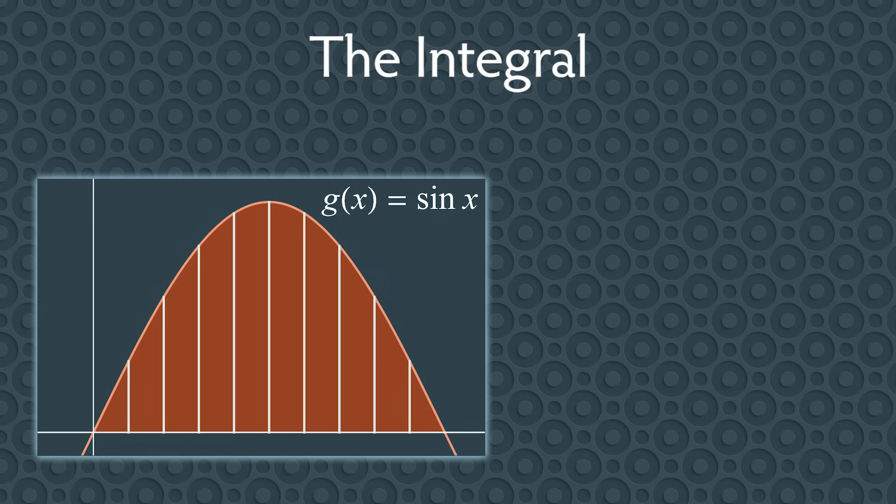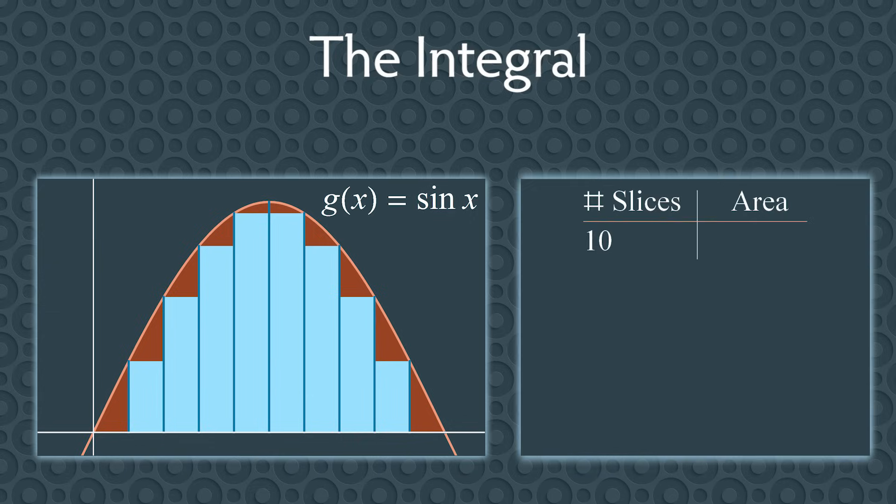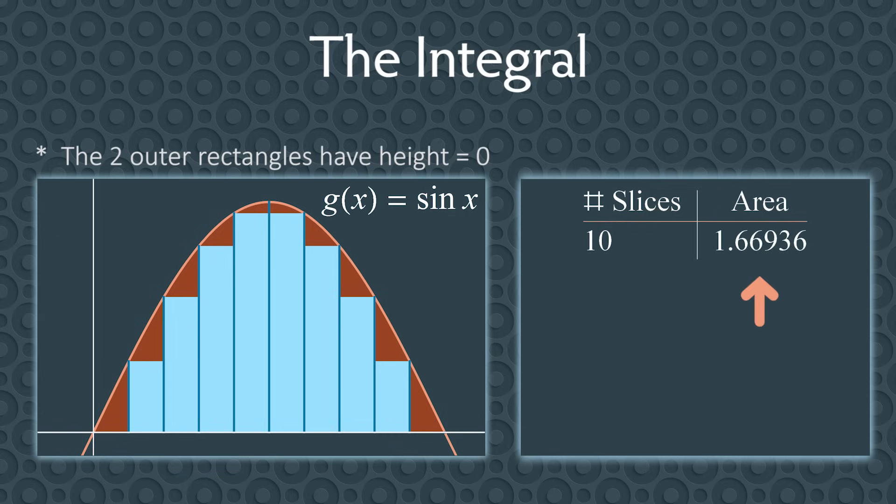Here is the idea. Slice the region into a bunch of very thin sections. Let's start with thin slices. For each section, find the area of the tallest rectangle you can fit inside. There are 10 thin rectangles. The width of each rectangle is pi over 10, and we can find the height using the function g of x. Next, add up the areas of all 10 rectangles. We get a combined area of 1.66936. This is a pretty good approximation to the area under the curve, but we can do better.